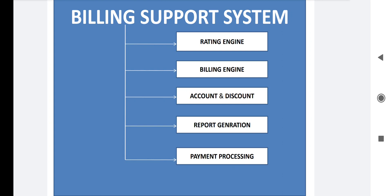Mostly, at the time of rating the discount is considered, and if the discount is to be given at the time of billing, it is also calculated in the billing system. For example, if you subscribed to a particular plan at the start and there was no discount at that time, the rating engine calculates the amount according to the standard charge sheet. But at the time of bill payment, if any discount is applicable, it is considered while generating the invoice.